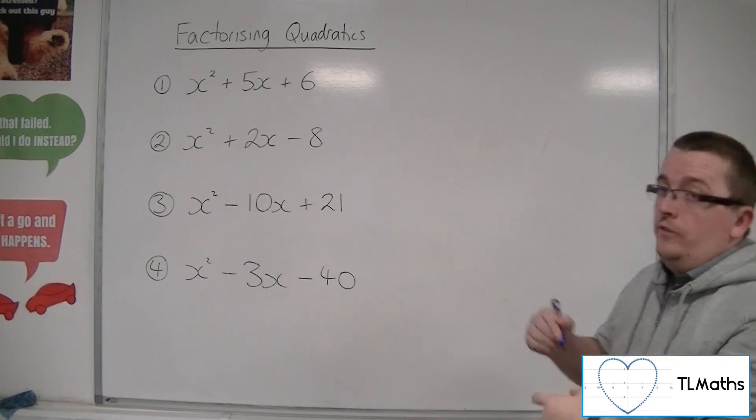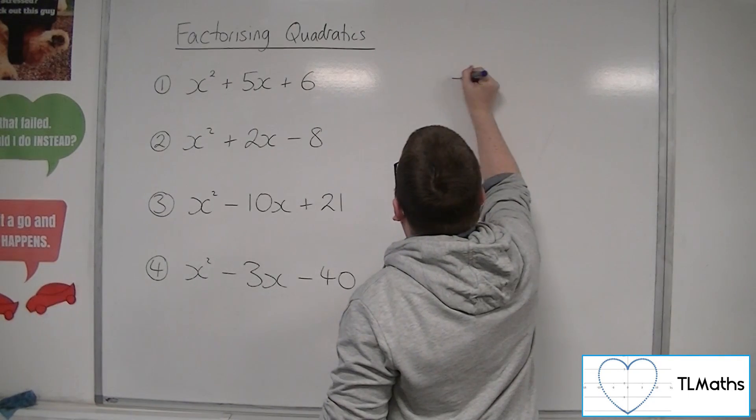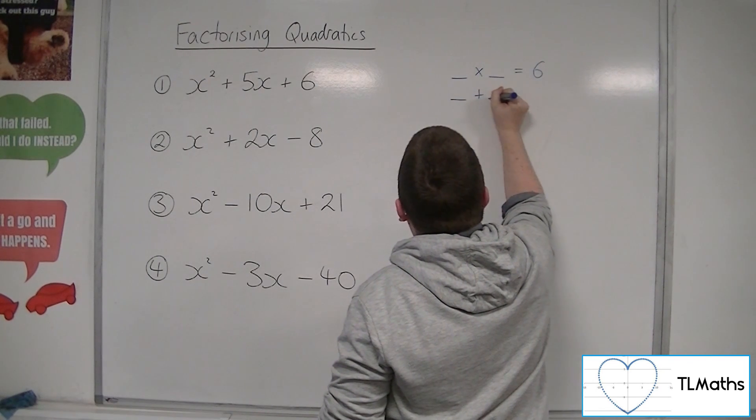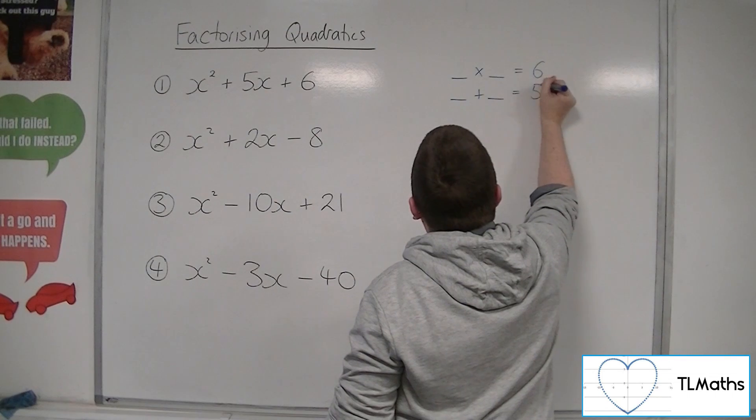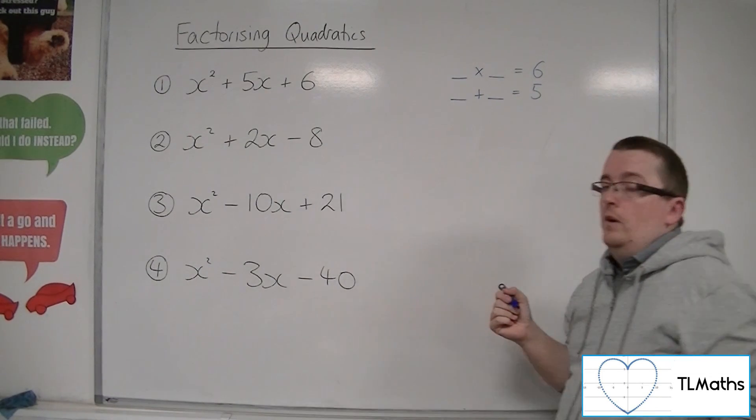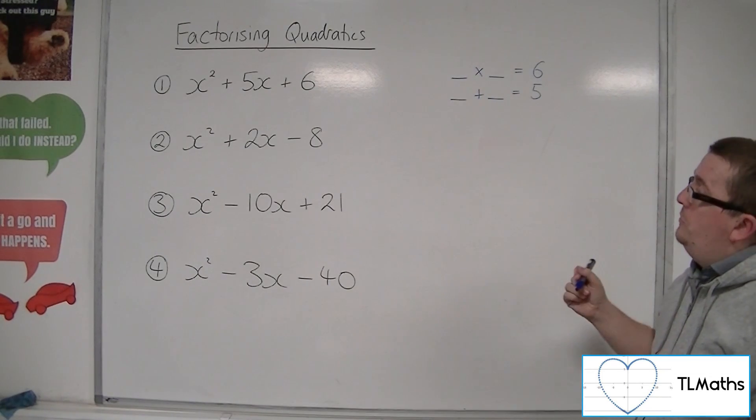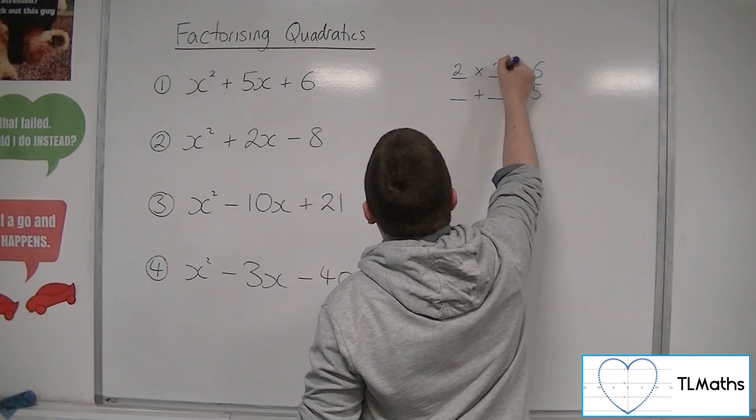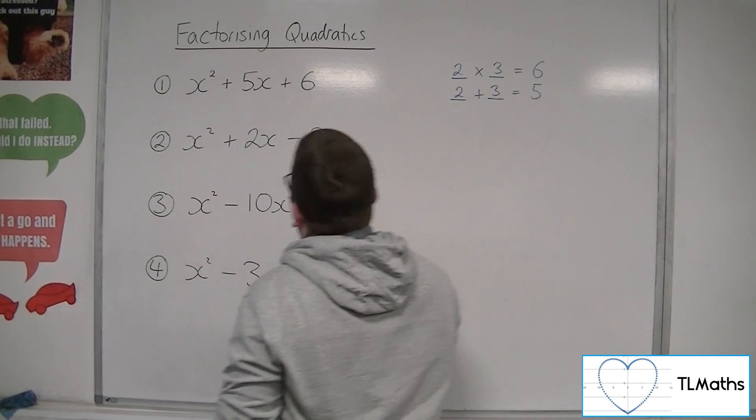In other words, two numbers that multiply together to make 6 but add together to make 5. Now the only numbers that can do that are 2 and 3. So we'd have 2 times 3 is 6, and 2 plus 3 is 5.